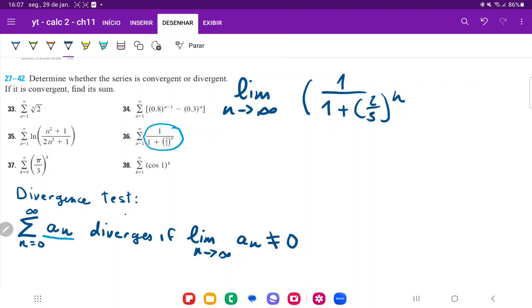This is going to be, the limit on top is just 1, that doesn't change. So 1 over, on the bottom is just 1 as well, plus what is the limit of 2/3 raised to the power of n?